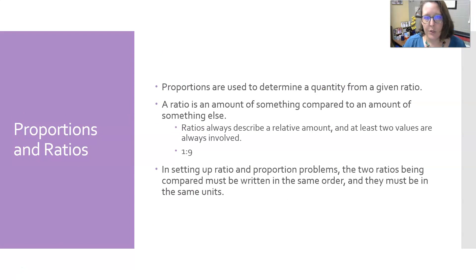Proportions and ratios: proportions are used to determine a quantity from a given ratio. A ratio is an amount of something compared to an amount of something else. Ratios always describe a relative amount, so there's at least two values that are involved. We see those used in instructions for dilutions. For example, like we just did with the bleach, to make a 10% bleach.